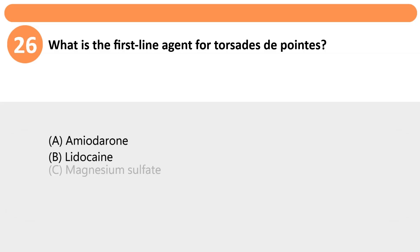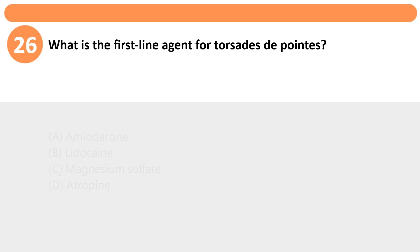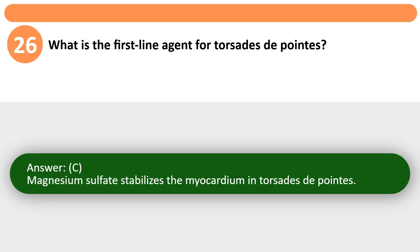What is the first-line agent for torsades de pointes? A. Amiodarone. B. Lidocaine. C. Magnesium sulfate. D. Atropine. Answer: C. Magnesium sulfate stabilizes the myocardium in torsades de pointes.